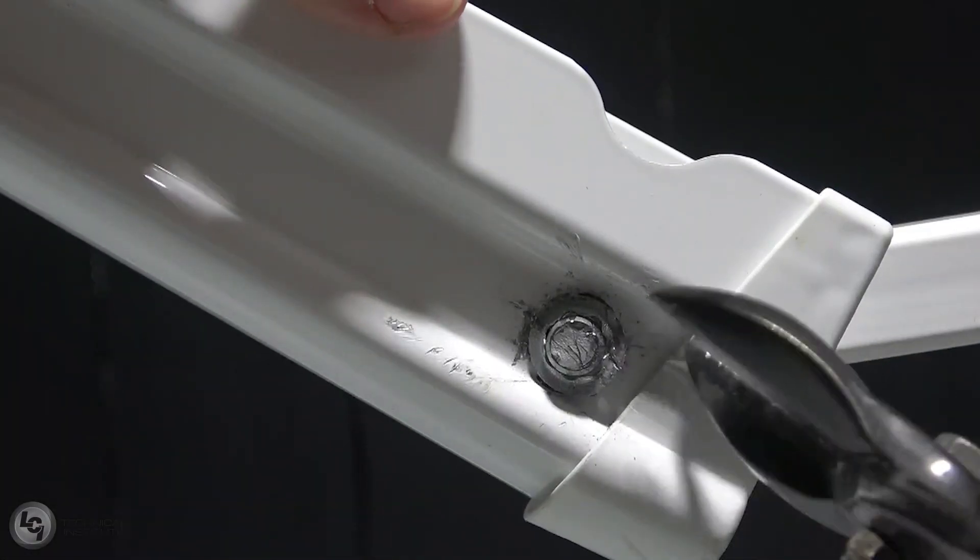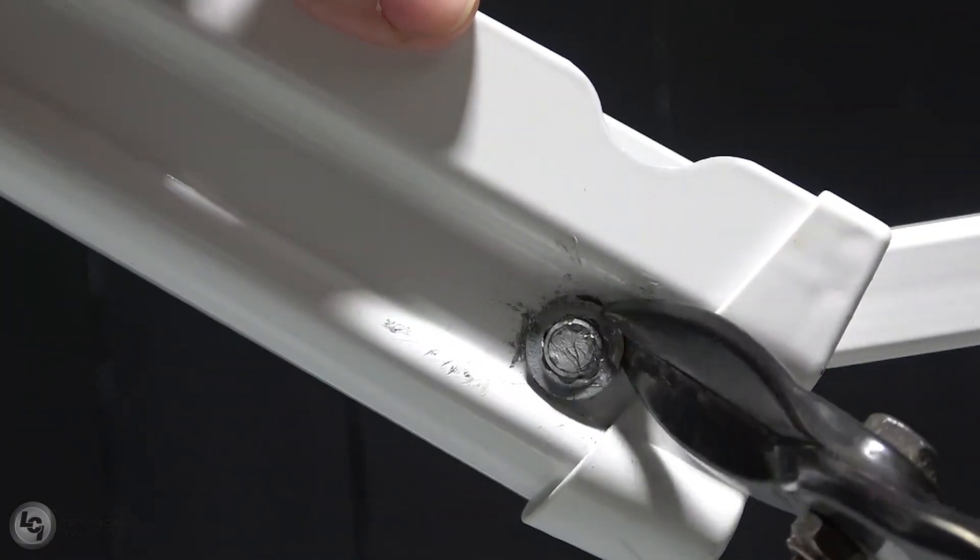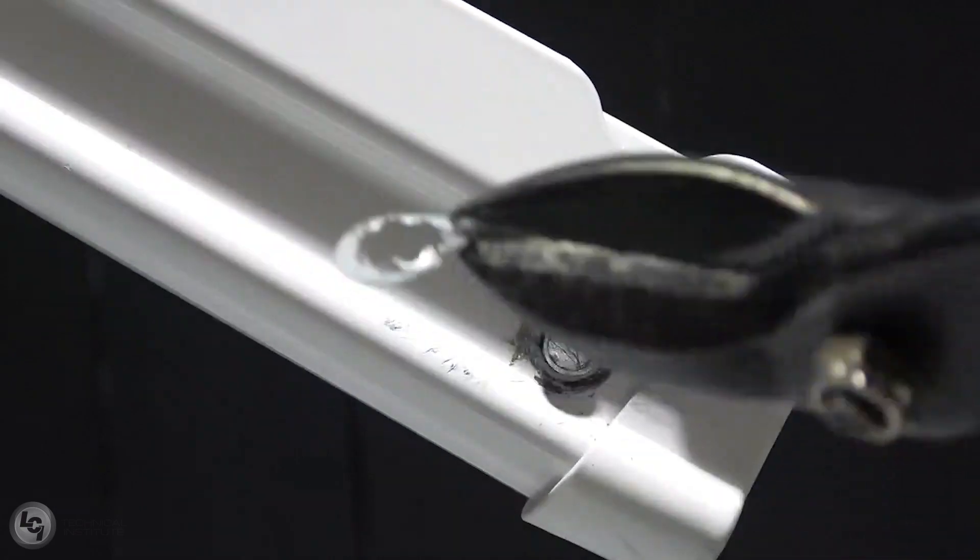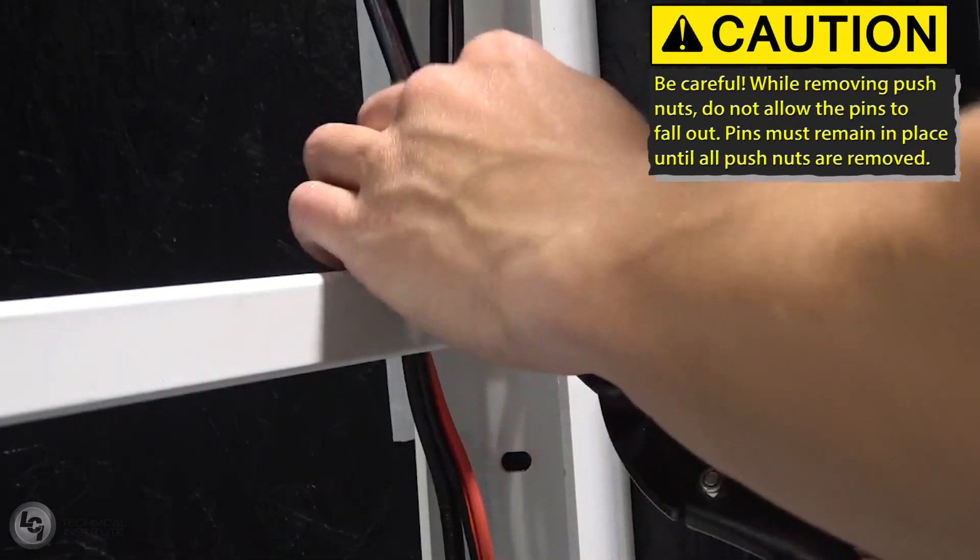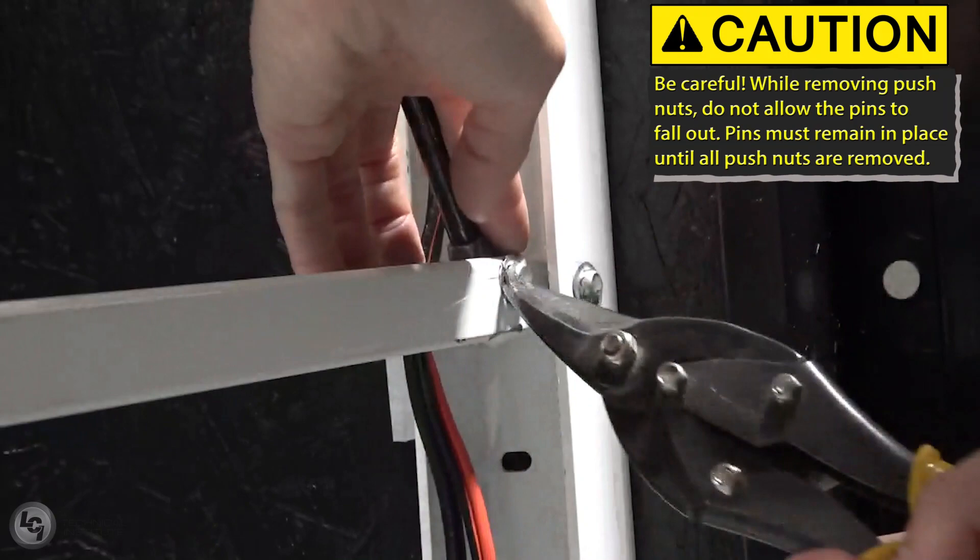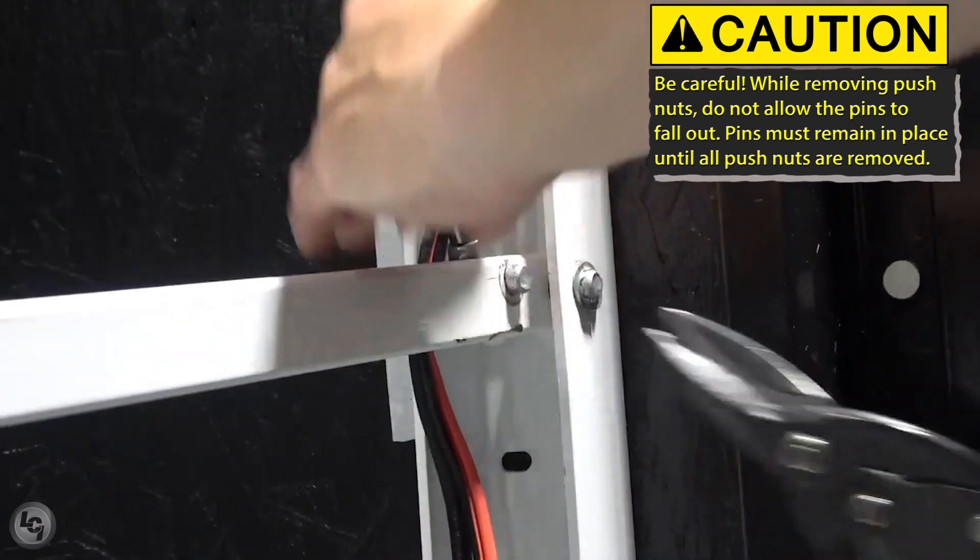In order to remove the pins, we're going to use tin snips to remove the push nuts securing the pins on the awning. The push nuts are a one-time use component, so once they've been removed, we'll be replacing them with new ones once we go to reassemble these components.